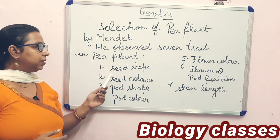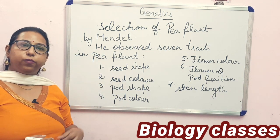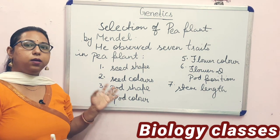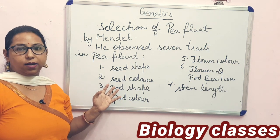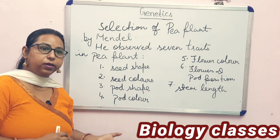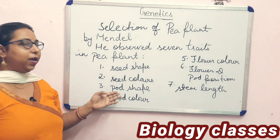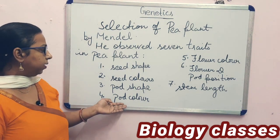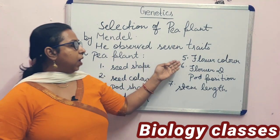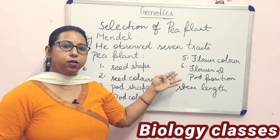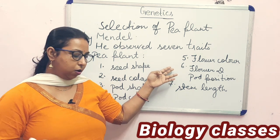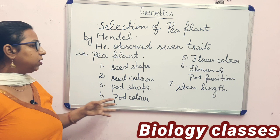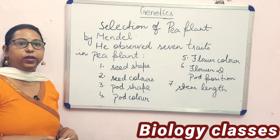The first character was seed shape — it may be round or wrinkled. The second was seed colour — it may be yellow or green. Third was pod shape — that may be inflated or constricted. Fourth was pod colour — it may be green or yellow. Fifth was flower colour — it may be purple or white. Sixth was flower position — it may be terminal or axial. Seventh was stem length — it may be tall or dwarf. These are the seven characters Mendel observed in the pea plant.